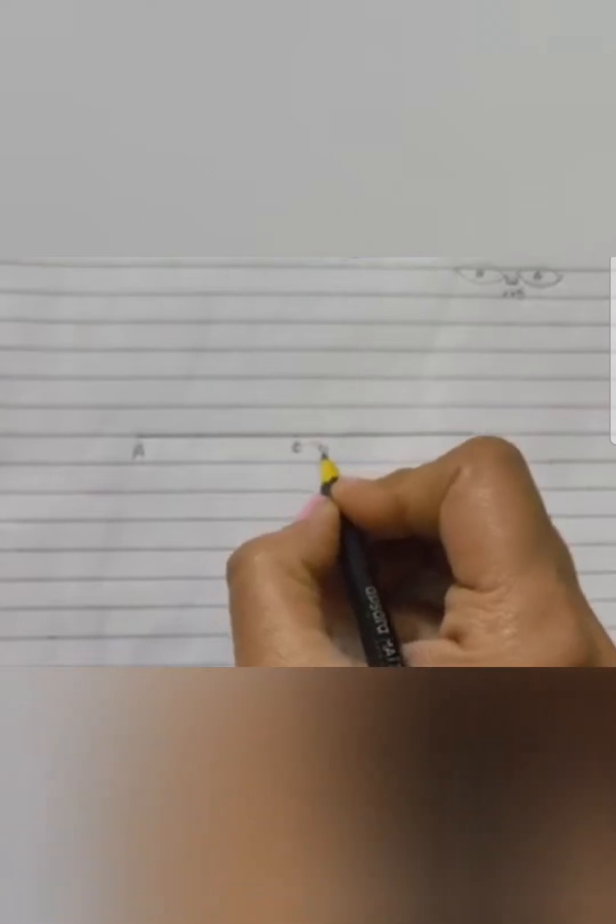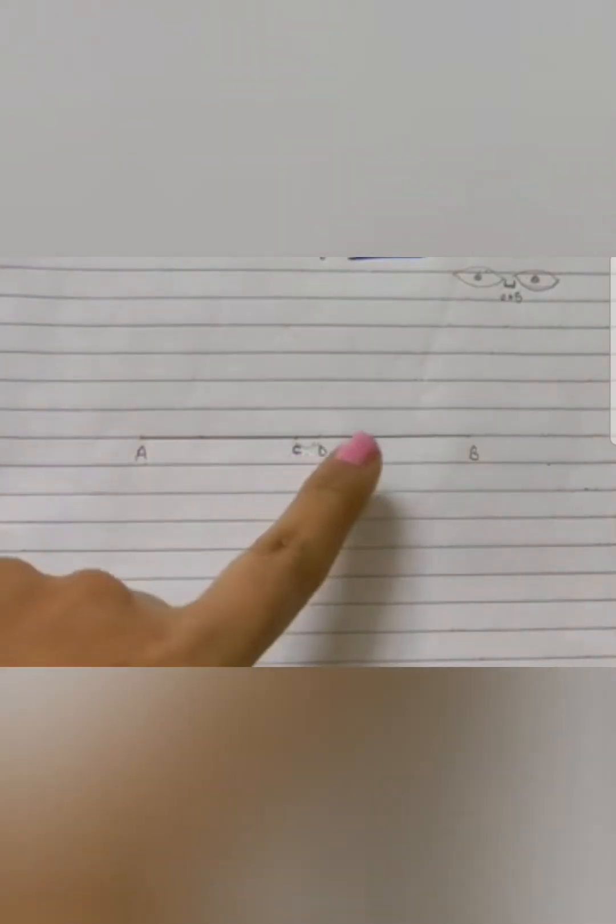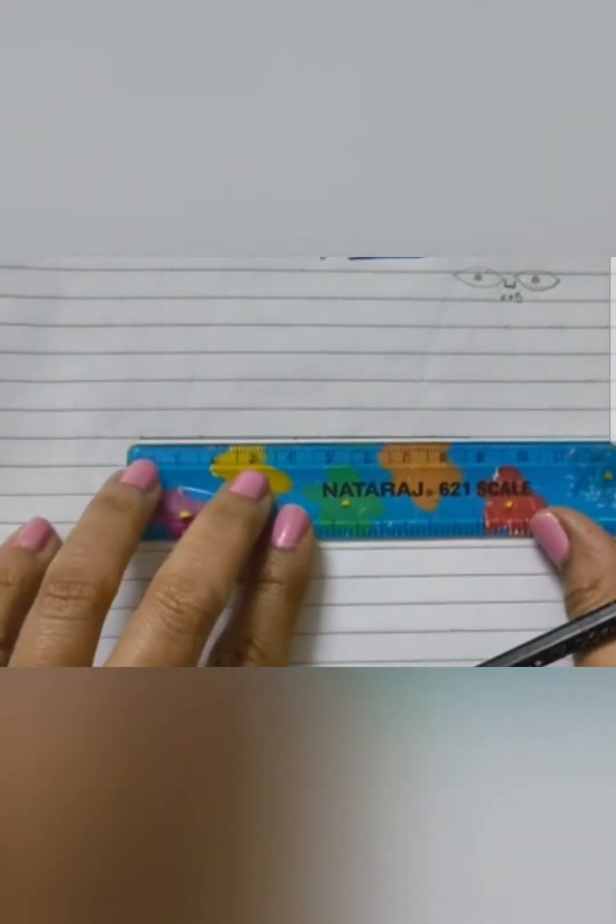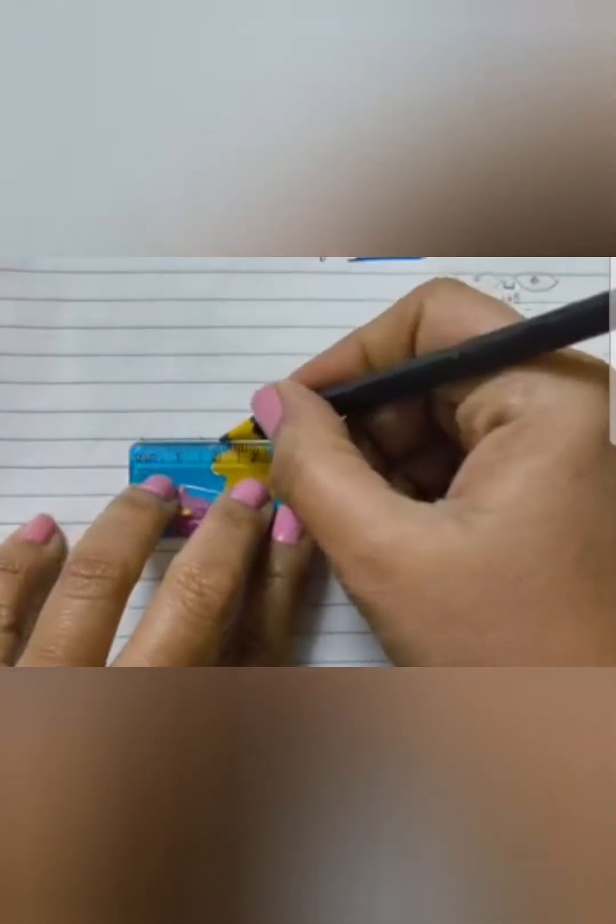Now I am naming it as A, B, C, D. After drawing this, I am going to divide AC and DB into two equal parts again with 2 centimeters and the gap of 0.5 centimeters on both sides.